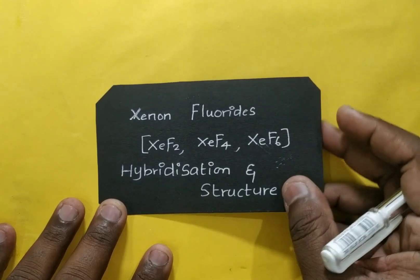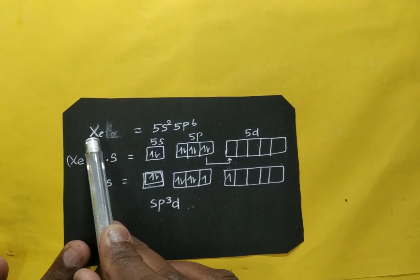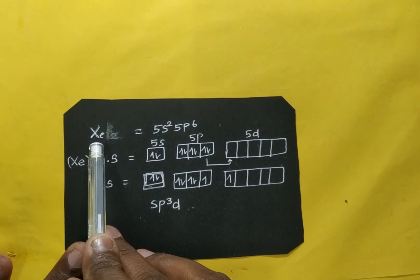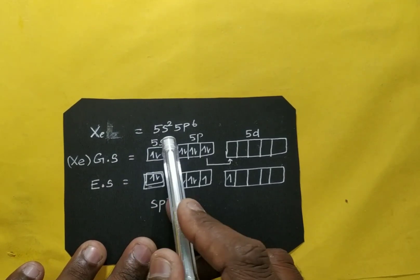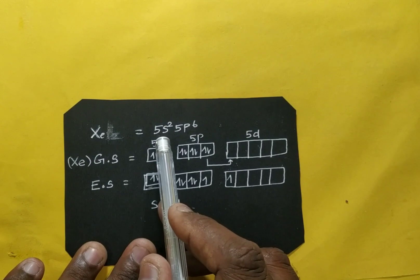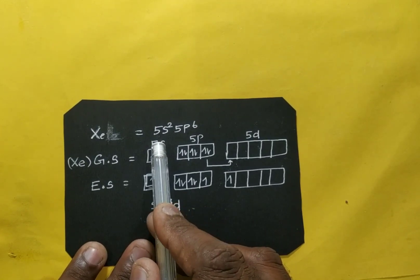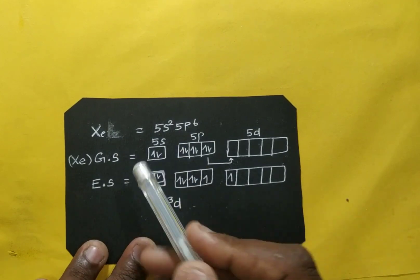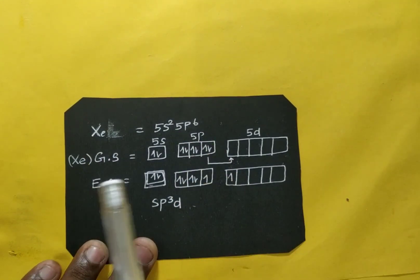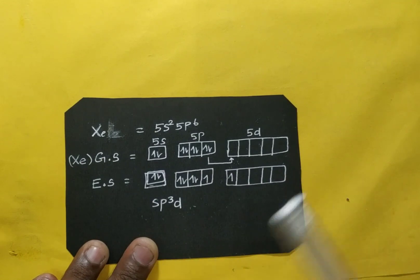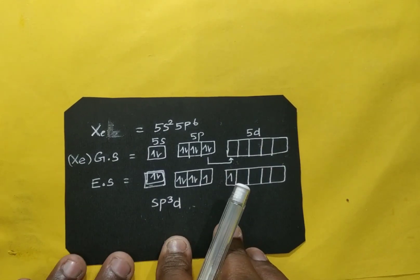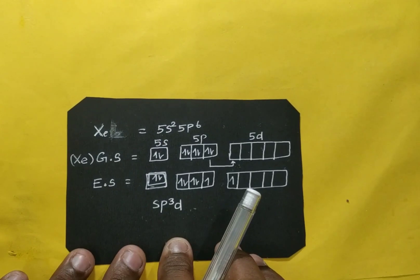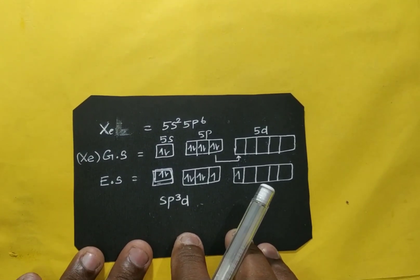First we need to identify the hybridization, so we need some idea about hybridization tricks. Xenon is a noble gas — it was once considered inert, but xenon forms many compounds, so we should not call it an inert gas. It is always referred to as a noble gas.